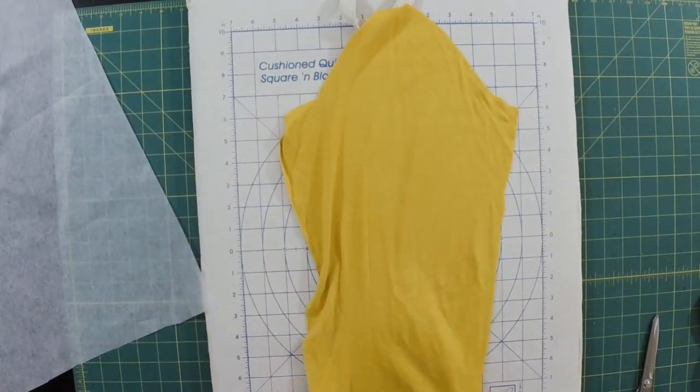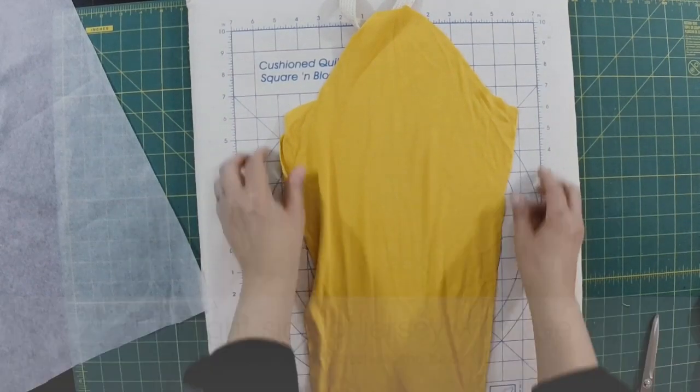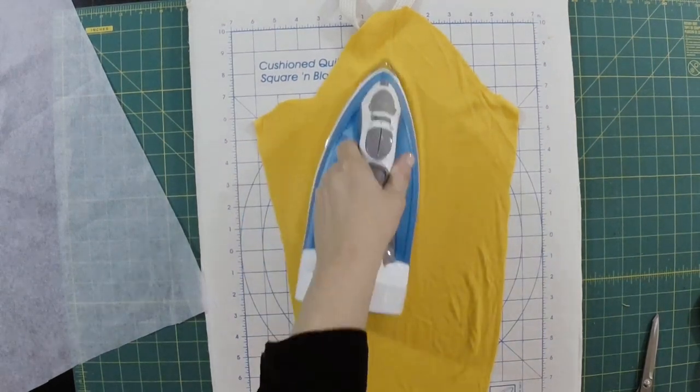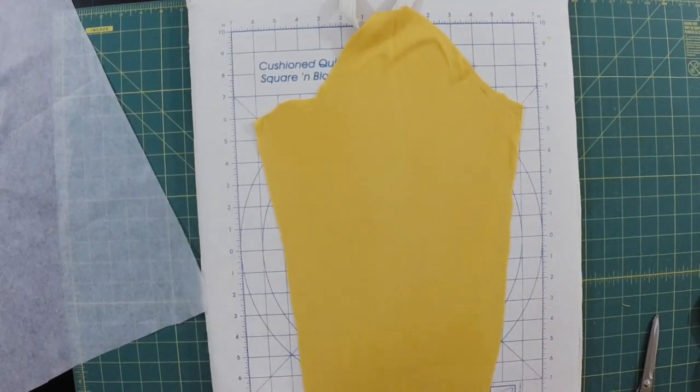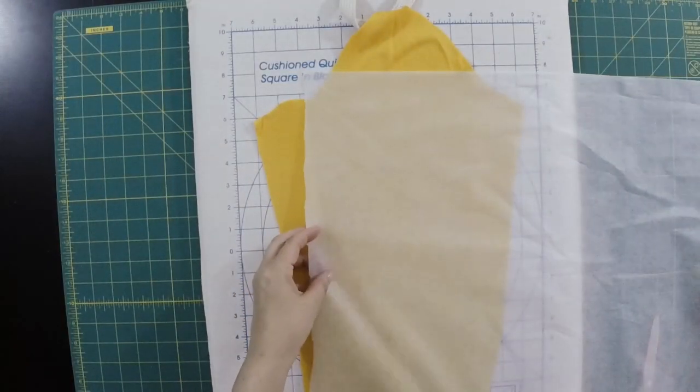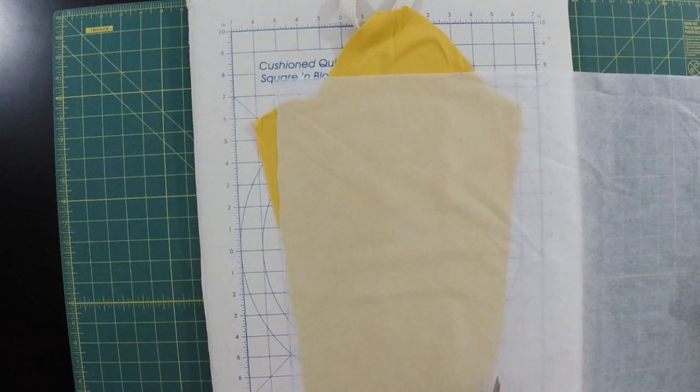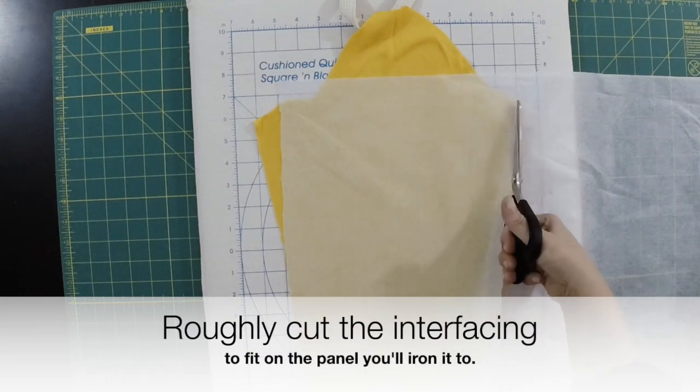Let's put the wrong side of the fabric up. And with your iron, I've got my iron set to cotton. I'm just going to press it out just to get the wrinkles out. You don't want to get this interfacing on your ironing surface, because you're essentially going to iron it down to your ironing surface. So that's not anything that you want to do. So I cut it a tiny bit smaller.